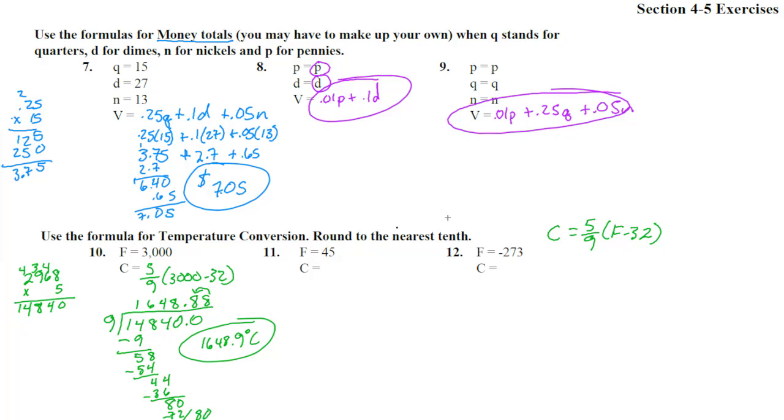Number 11. 45 degrees. So we stick 45 in there and we get 5 ninths times 45 minus 32. 45 minus 32 is 13. So we get 5 ninths times 13. 5 times 13 is 65 ninths. So take 65 divided by 9. 9 goes into 65 seven times. 7 times 9 is 63. Subtract and we get a 2. Put a 0 there. 9 goes into 20 twice. That's 18. So we get another 2. So it's going to be 7.2 on forever. Round at the nearest tenth, 7.2 degrees Celsius.